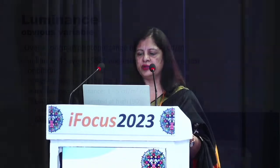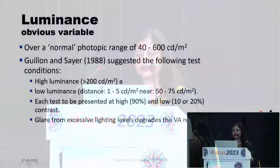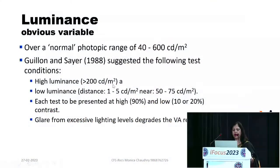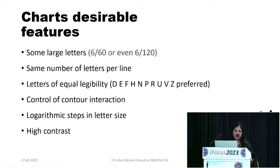Regarding luminance, the eye has a photopic range of 40 to 600 cd/m². High luminance testing should be around 200 and low luminance around 50–75. Each visual acuity test should be performed at high luminance.